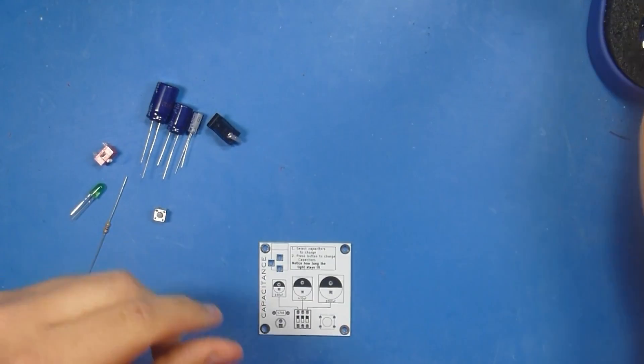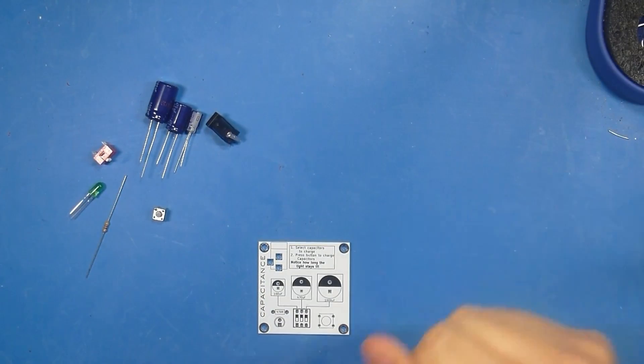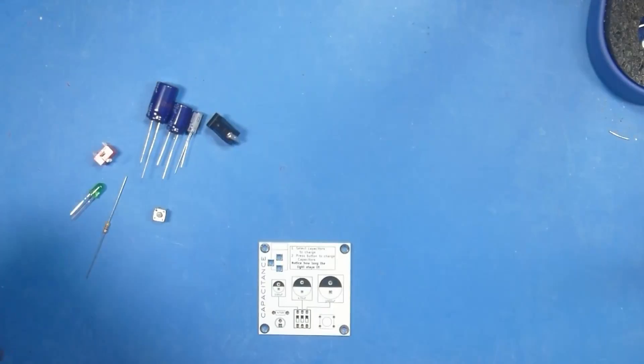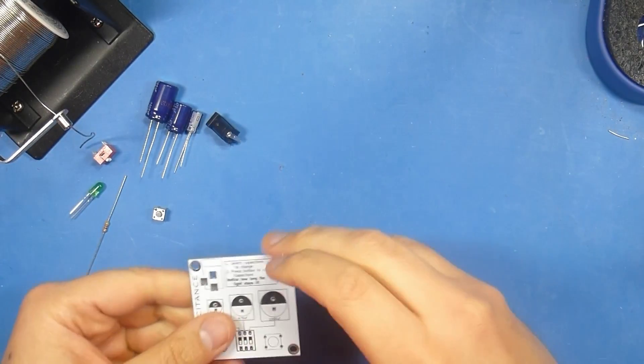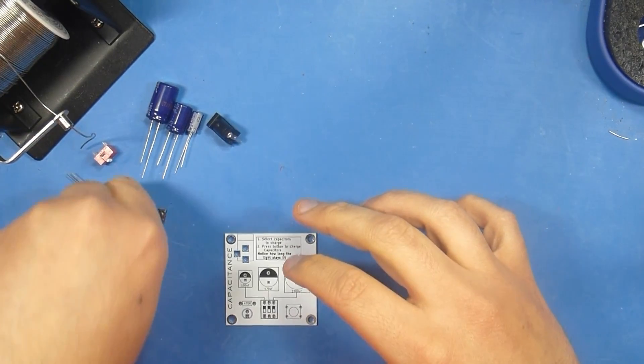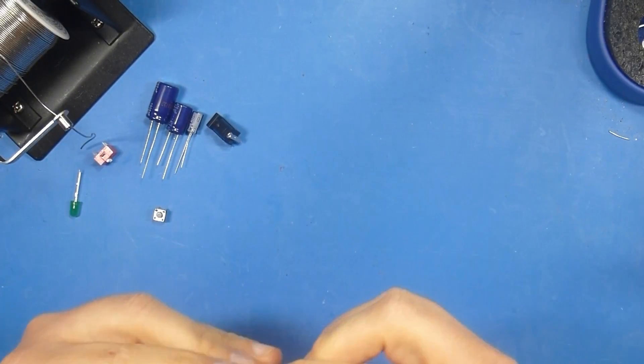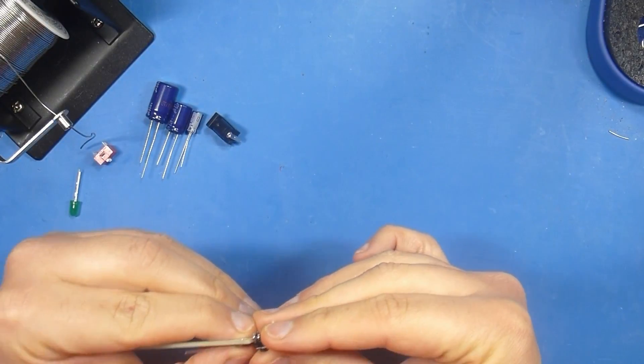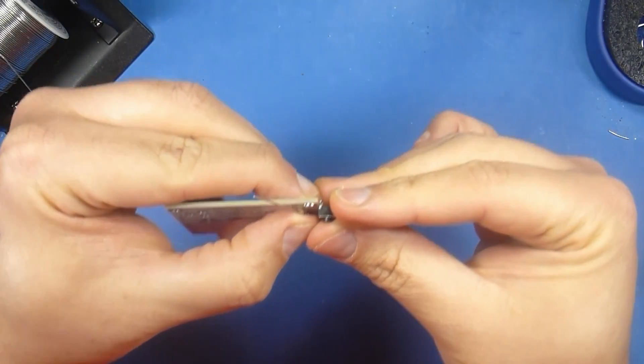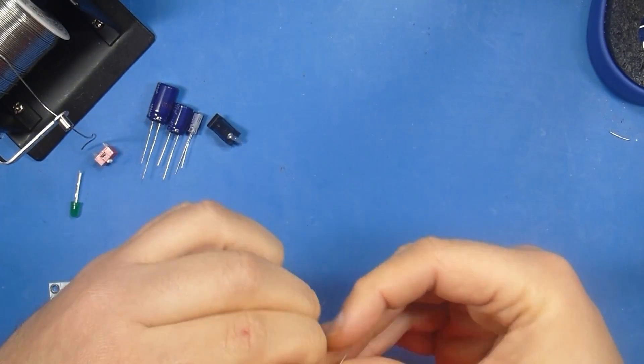You're going to need a soldering iron. It doesn't have to be a fancy one. Any old soldering iron will do. You need some solder. I've got this fancy roller but you don't need that. You need a clean work surface, preferably one that's heat proof. And we're going to start off by figuring out which of our components sits most flush on the board. If you've seen some of the other soldering videos you know this technique but we're still going to go through it.